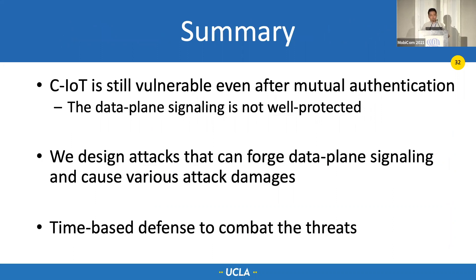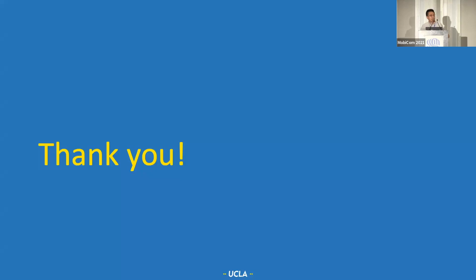In summary, this work unveils multiple vulnerabilities in cIoT networks. We find that data plane signaling in cIoT networks is not secure. We designed attacks that can successfully forge uplink and downlink signaling messages and cause various damages, and we designed a time-based protection scheme to encrypt and integrity-protect data plane signaling messages. This is one of the first works to study cIoT network security, and we hope our effort, along with the testbed and tools we built, can stimulate more work in this area. Thank you very much — I'm happy to answer any questions.